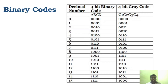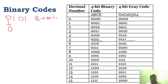To make it clear, I will take decimal 5, which is 0101 in binary. I need to convert this to grey code. The MSB is 0 — same. For the second bit: XOR 0 and 1 = 1. For the third bit: XOR 1 and 0 = 1. For the fourth bit: XOR 0 and 1 = 1. So the grey code for 0101 is 0111.